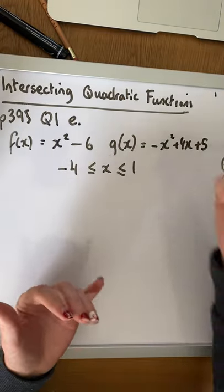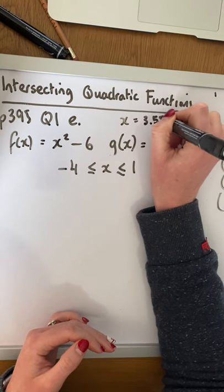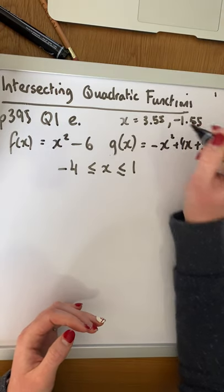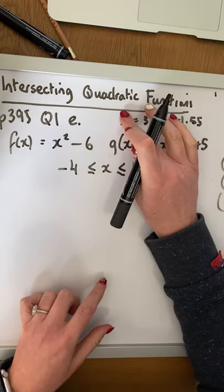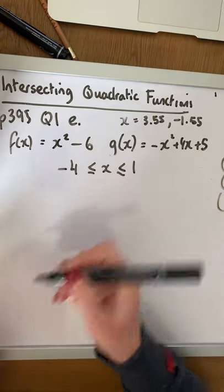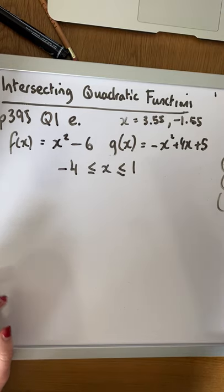Now, we know that from our algebra that the two intersecting points were 3.55 and minus 1.55. So those are the two values of x. So those are the two x values that we need to concentrate on. So when you're drawing your graph, we need to go up to 10 on the y-axis down to minus 27.